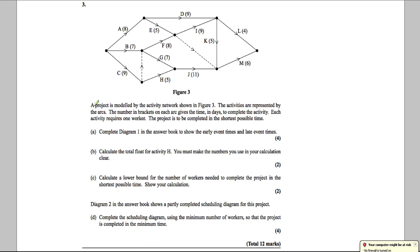A project is modelled by an activity network shown in figure three. The activities are represented by arcs; the number in brackets is the time in days to complete each activity. Each activity requires one worker. The project is to be completed in the shortest possible time. Complete diagram one to show the early event times and the late event times.